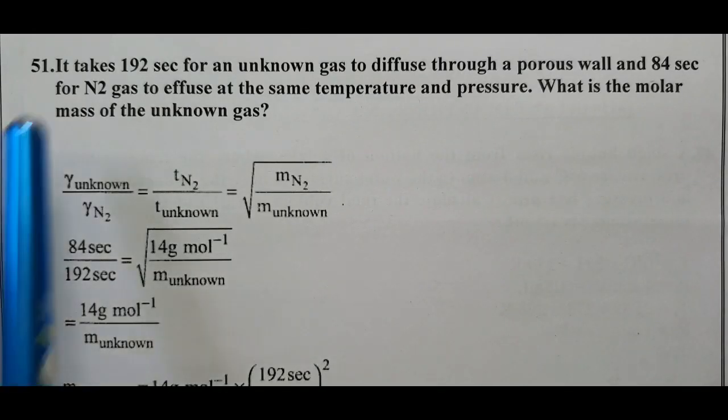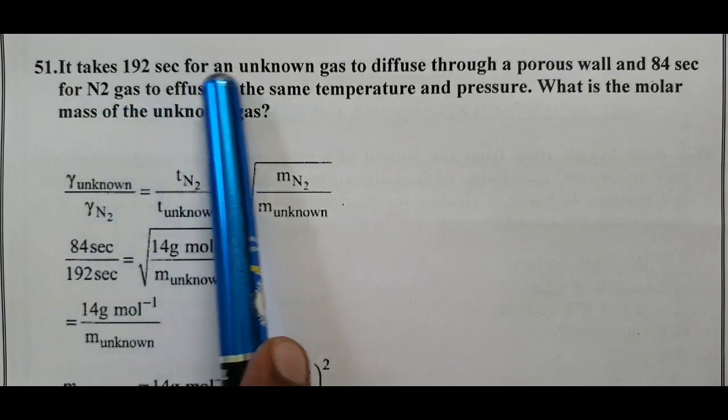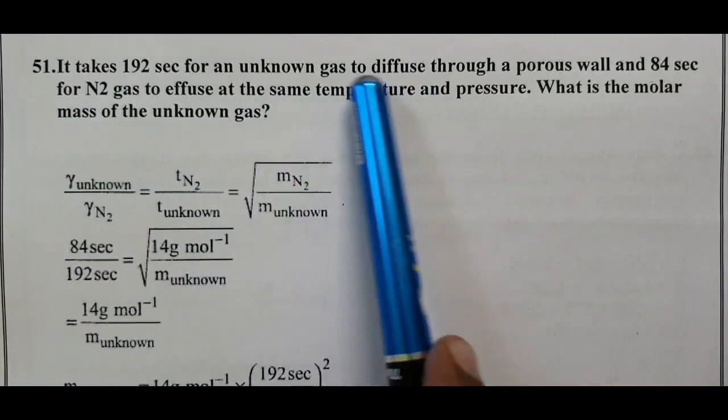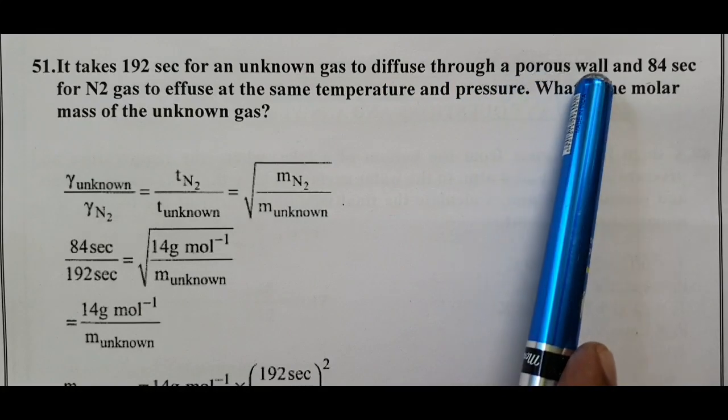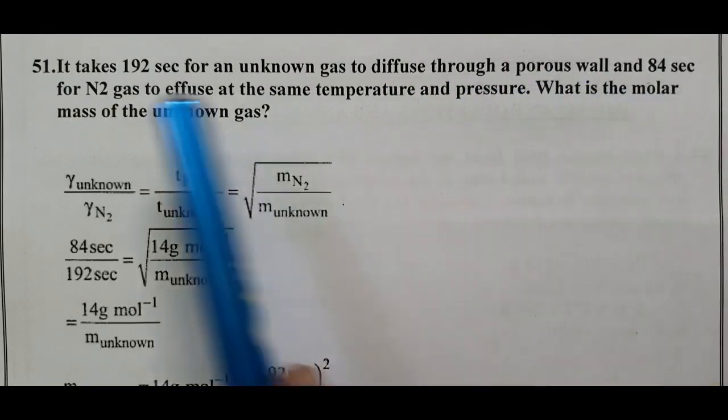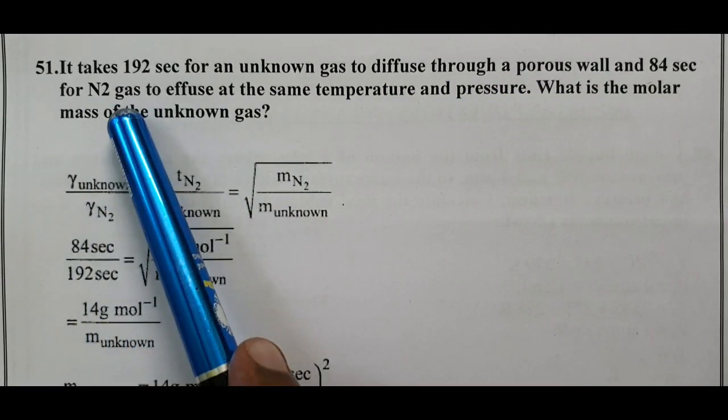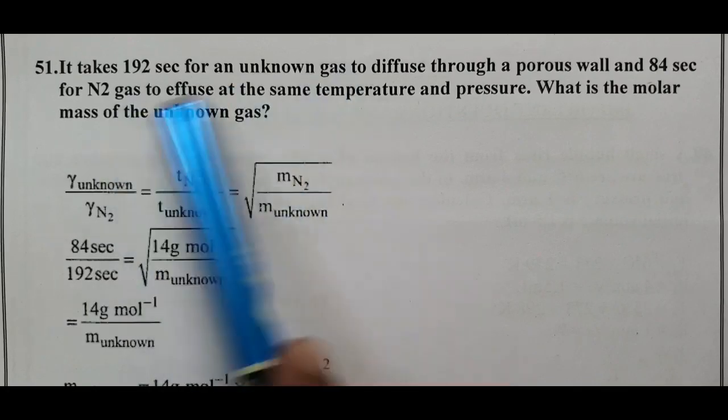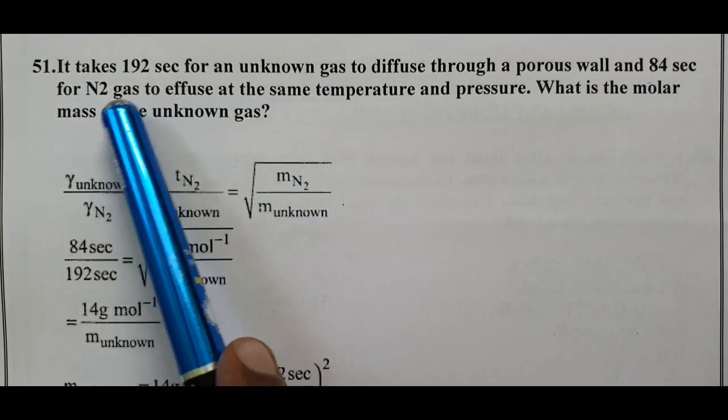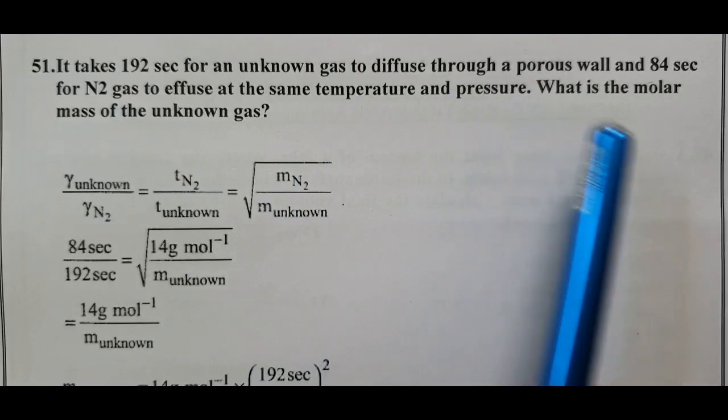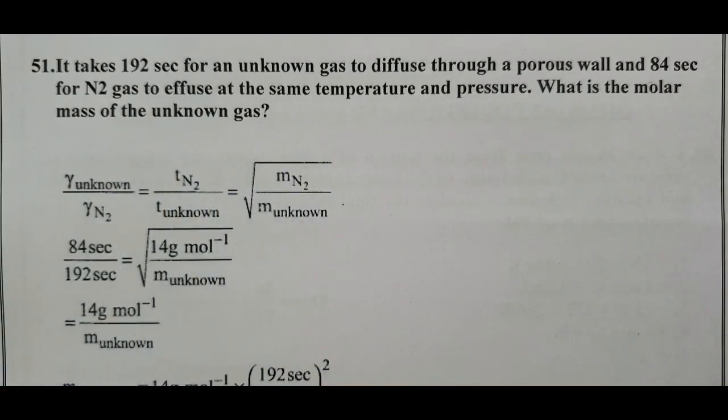Question Number 51: It takes 192 seconds for an unknown gas to diffuse through a porous wall and 84 seconds for nitrogen gas. This is Graham's law of diffusion.